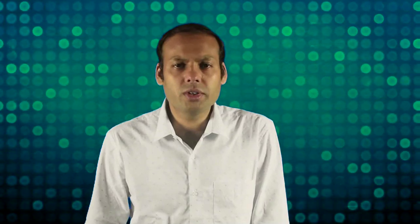The Purchase Return Book is also known as the Returns Outward Book. All transactions relating to the return of goods are recorded here. Suppose we purchased some goods and they were returned due to damage or not being according to specifications. All such returns related to credit purchases — goods purchased and then returned — will be recorded in the Purchase Return Book.